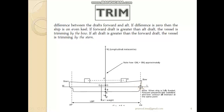Depending on voyage conditions, we would prefer sometimes to have trim and sometimes not. For example, when a ship moves in rough weather or rough seas, the captain may opt to have trim by aft for the sake of stability. Also, warships have a tendency to have a natural trim by aft for the sake of their operational purposes.